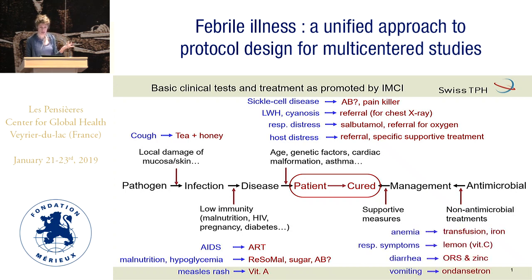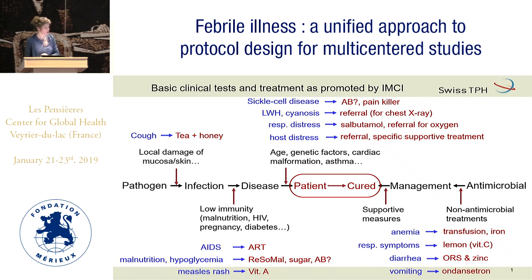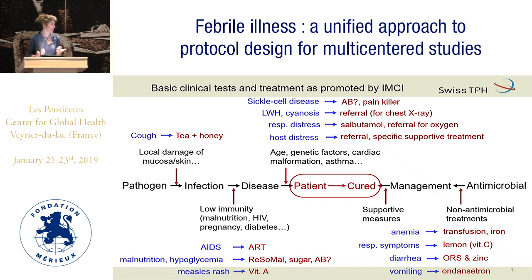An example of non-antimicrobial treatments that are essential: anemia is one of the most important clinical predictors of severe bacterial disease, so we have to look for it. Palmar pallor is probably not enough to detect it, so we probably need a test. Transfusion and iron make the difference. For respiratory symptoms, why does IMCI say put lemon in the tea? It's vitamin C — orange juice every morning as soon as children have a virus will probably help much more than an antibiotic.